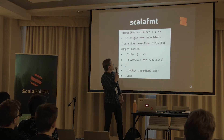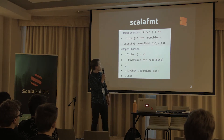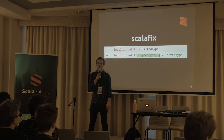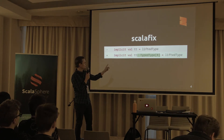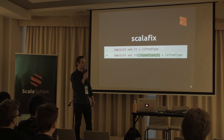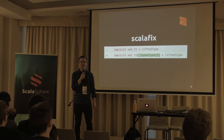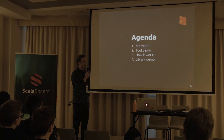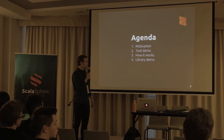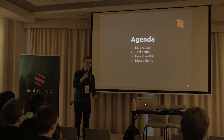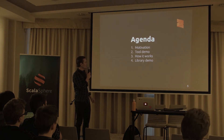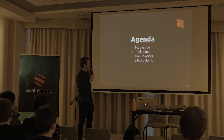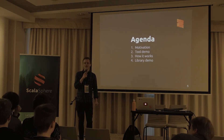I worked on a formatter called ScalaFMT and it produces a bunch of diffs like this. The talk today is not about ScalaFMT but it's about a tool that does a very similar thing. It also produces lots of diffs but the diffs are very different because now it's inserting tokens and removing tokens, whereas the formatter is constrained to just whitespace and new lines. I want to motivate this talk — there was another talk from Matthias today on Scala refactoring and we're at a developer tools conference. I'll have one tool demo and one library demo at the end.